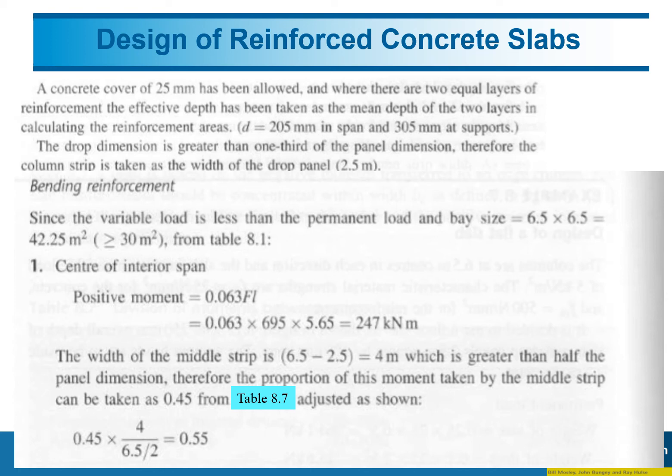The next step is to calculate the bending moment at the center of the interior span. We have a concrete cover of 25 mm, and the effective depth for the slab is 205 mm. How to get the effective depth: D equals slab thickness minus concrete cover minus diameter of rebar.